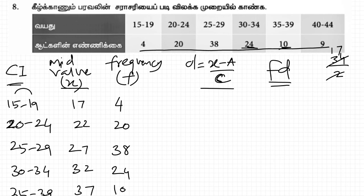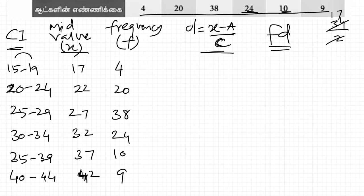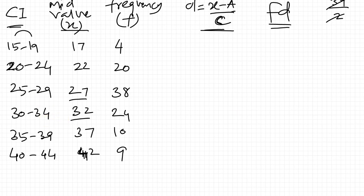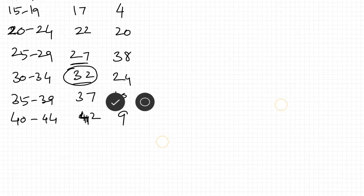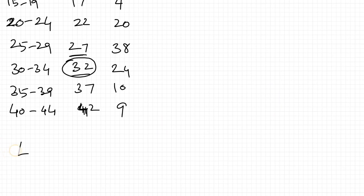Now we need to decide the assumed mean. Looking at the mid values, I'll choose 32, which is roughly in the middle. Let us assume a is equal to 32. The class interval width c is equal to 5.